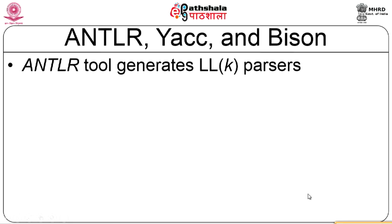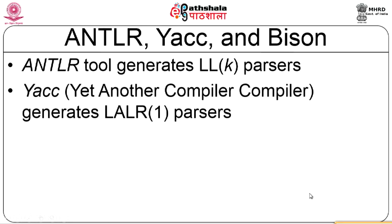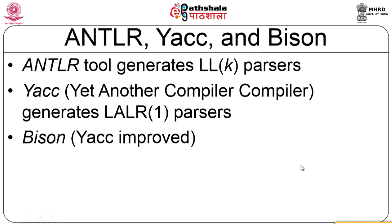Some available parsers are the ANTLR parser, the YACC parser, and the Bison parser. ANTLR is a tool that generates LL(k) parsers — the top-down non-recursive parser. YACC is an acronym for 'Yet Another Compiler Compiler' and generates LALR(1) parsers. The k and 1 here indicate how many input symbols are considered at a particular point. Bison is essentially a faster version of the YACC parser. The one that comes with the Unix utility is YACC.